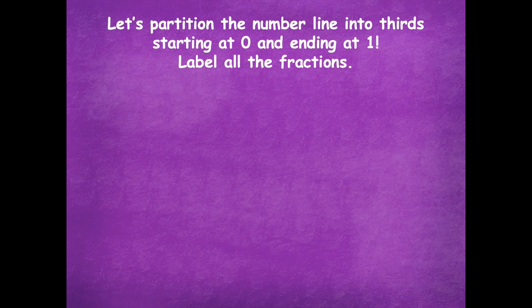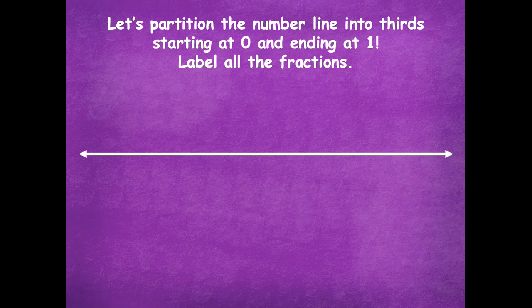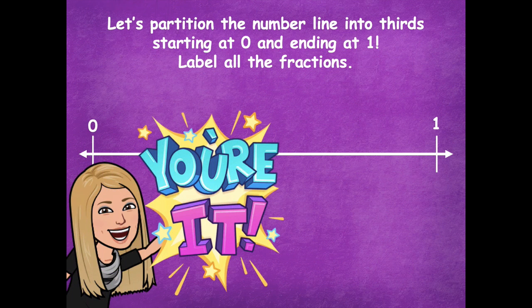So let's partition the number line into thirds, starting at zero and ending at one, and you're going to label all the fractions. Here's your number line from zero to one. Go ahead and pause the video, partition the number line into thirds, label all the fractions, and then click play when you're ready to go over it together.